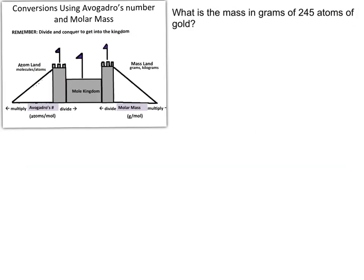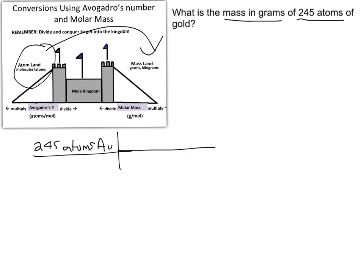So with the problem that we see here, they're asking us to calculate the mass in grams of 245 atoms of gold. So we're going from atom land into mass land. So in this situation, we're going to put our number of atoms of gold into our given box. Now, in order to go from atom land to mass land, I first must get into the kingdom, so I must get into moles.